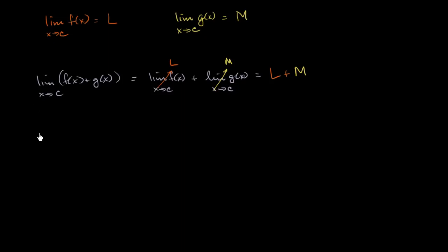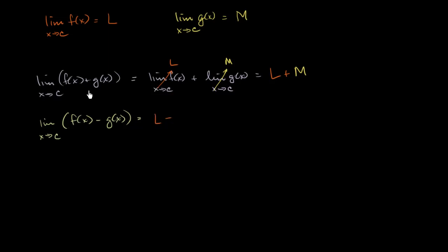We could come up with a very similar one with differences. The limit as x approaches c of f of x minus g of x is just going to be the limit of f of x as x approaches c minus the limit of g of x as x approaches c, which equals L minus M. That's often called the difference rule or the difference property of limits.